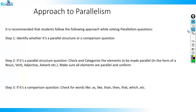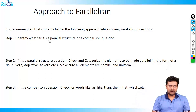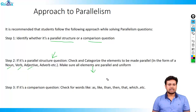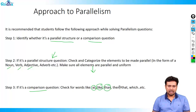For parallelism there is a three-step approach students must follow. Whenever you find a question, first identify whether it is a parallel structure or a comparison problem. If it's a parallel structure problem, understand each element that needs to be made parallel — whether the elements are nouns, verbs, adjectives, and so on — and ensure they are all parallel and uniform. If it's a comparison question, always look for words like 'as,' 'like,' 'than,' 'then,' 'that,' and so on, as these indicate comparison, and ensure the right forms of comparison are used.